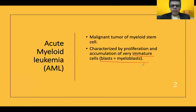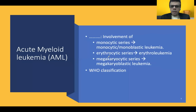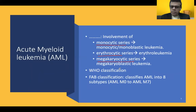That is myeloblast in case of acute myeloid leukemia. It may involve different cell lines in the myeloid series, giving rise to different types of AML. You may see involvement of monocytic series, erythrocytic series, and even megakaryocytic series. The classification system is the WHO classification, which covers morphological classification, and the older FAB classification which classifies AML into subtypes from M0 to M7.